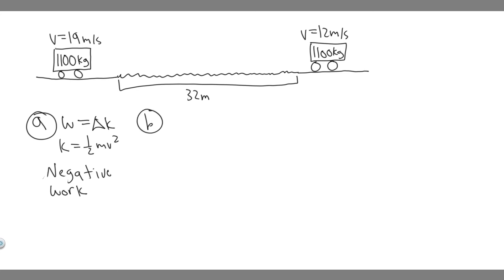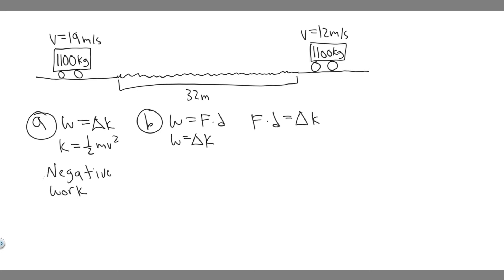Now let's move on to Part B: find the magnitude of the average net force on the car in the sandy section. We'll use the formula work equals force times distance times cosine of theta. Since the car is moving straight, cosine drops out and work equals force times distance. We also know work equals the change in kinetic energy, so force times distance equals the change in kinetic energy.